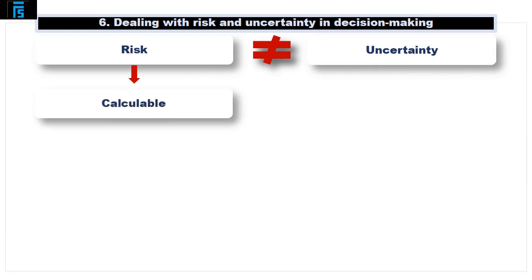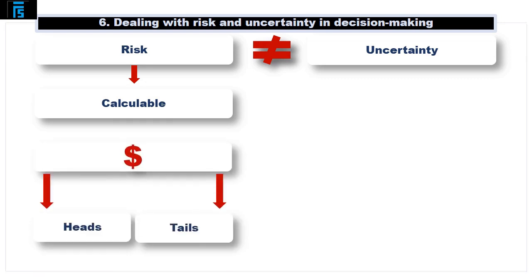Risk is calculable. It deals with known possible outcomes and known or estimated probabilities. For example, there is a risk associated with tossing a coin. We don't know whether we're going to get heads or tails, but we know from experience it's going to be one of those two, with a 0.5 or 50% probability of each. We can therefore build this risk into decision making.